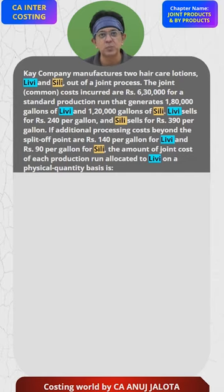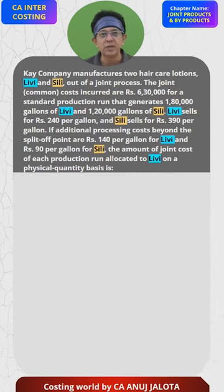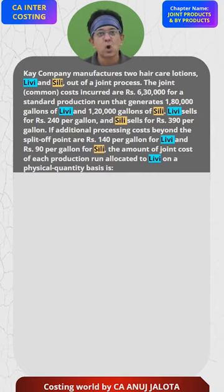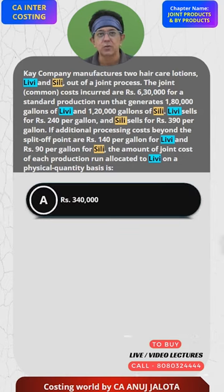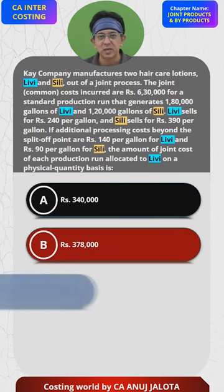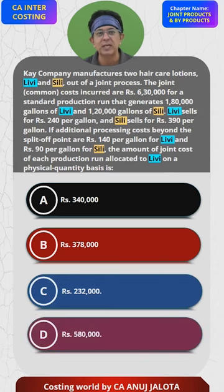Additional processing costs beyond the split-off point are ₹140 per gallon for Livy and ₹90 per gallon for Silly. The question asks: the amount of joint cost of each production run allocated to Livy on a physical quantity basis. Options are: A) ₹3,40,000, B) ₹3,78,000, C) ₹2,32,000, and D) ₹5,80,000.